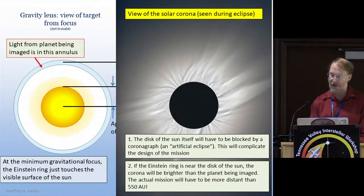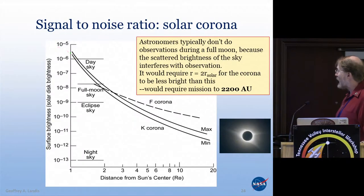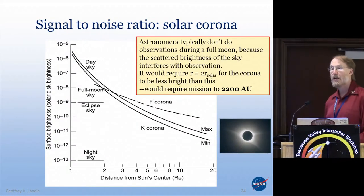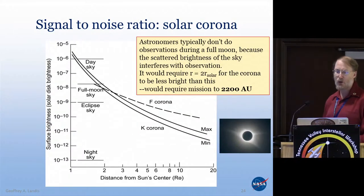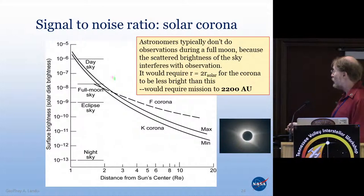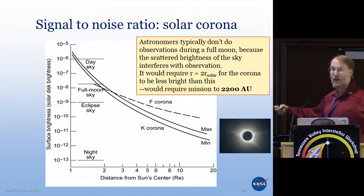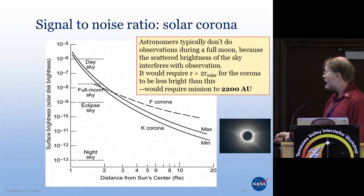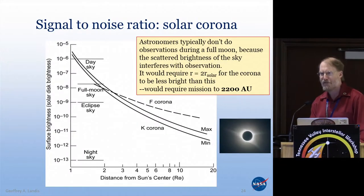Here's how bright that solar corona is. Very close to the sun, at about 1.2 solar radii, it's actually as bright as the day sky. Out almost to 4 solar radii, the brightness of the corona is as bright as the sky when the moon is full. Astronomers don't usually do observations when the moon is full because they consider that too bright. We'd have to go out to 2 times the radius of the sun, which means you'd have to be at 2,200 astronomical units to get that Einstein ring separated from the sun by two solar radii. That's probably too far — 550 AU is hard, and 2,200 AU is a bit harder.